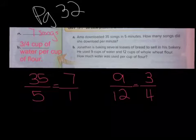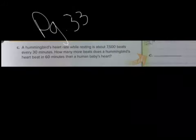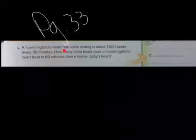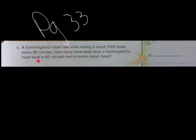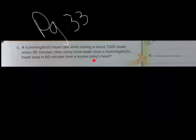Let's go to page 33. Let's read it together. Page 33. A hummingbird's heart rate while resting is about 7,500 beats every 30 minutes. How many more beats does a hummingbird's heart beat in 60 seconds than a human's heartbeat?